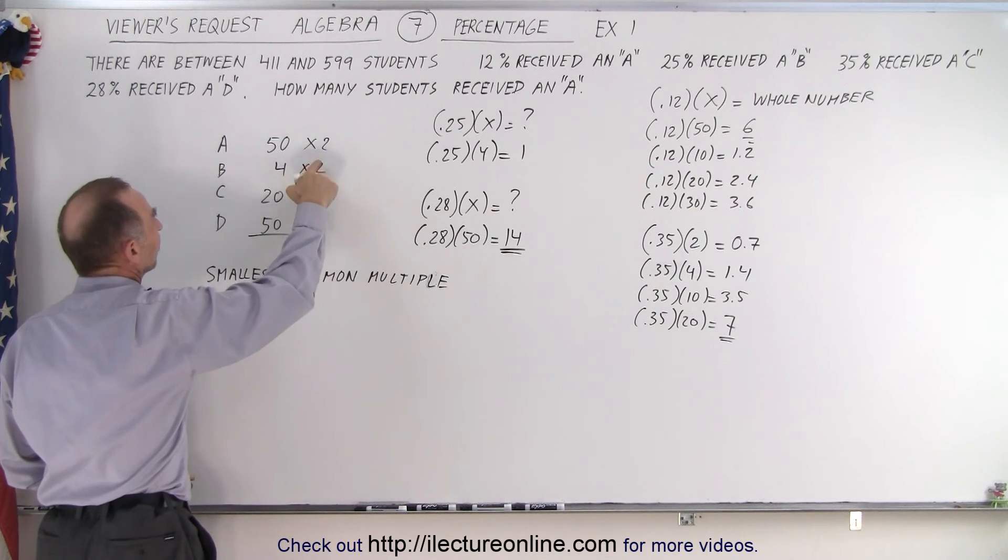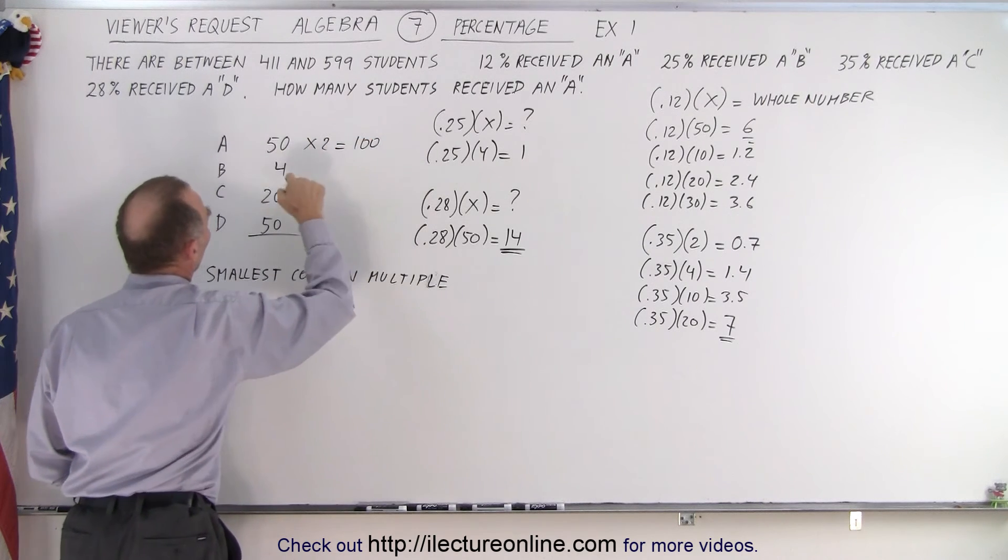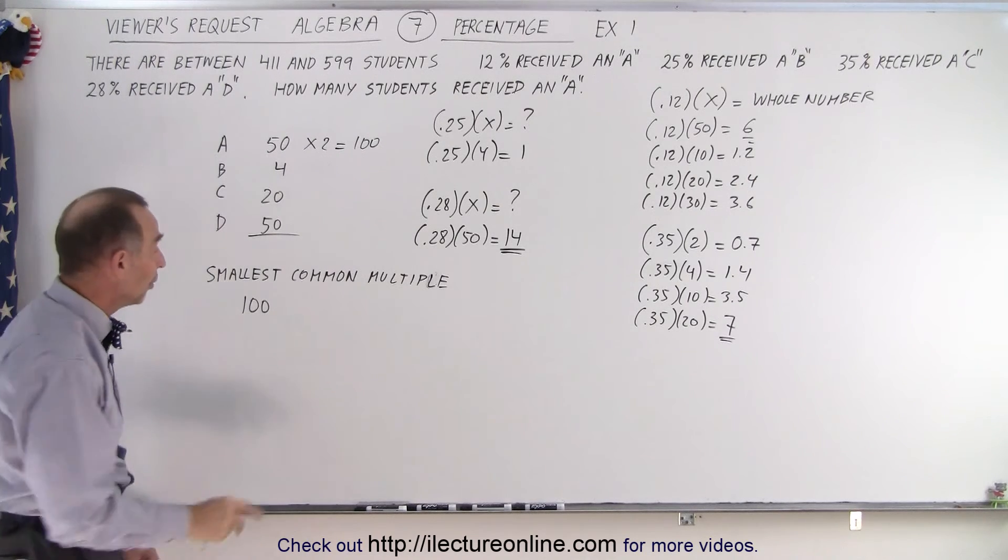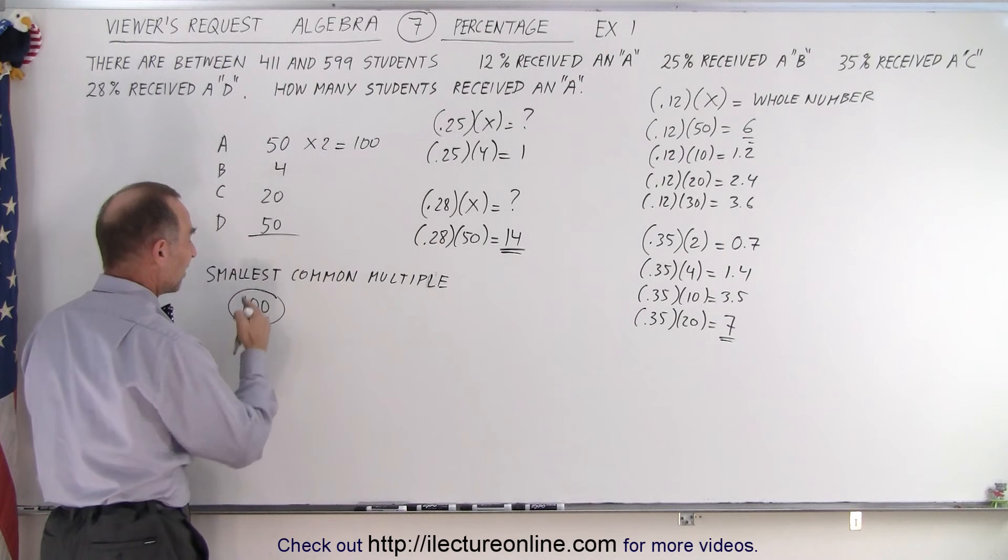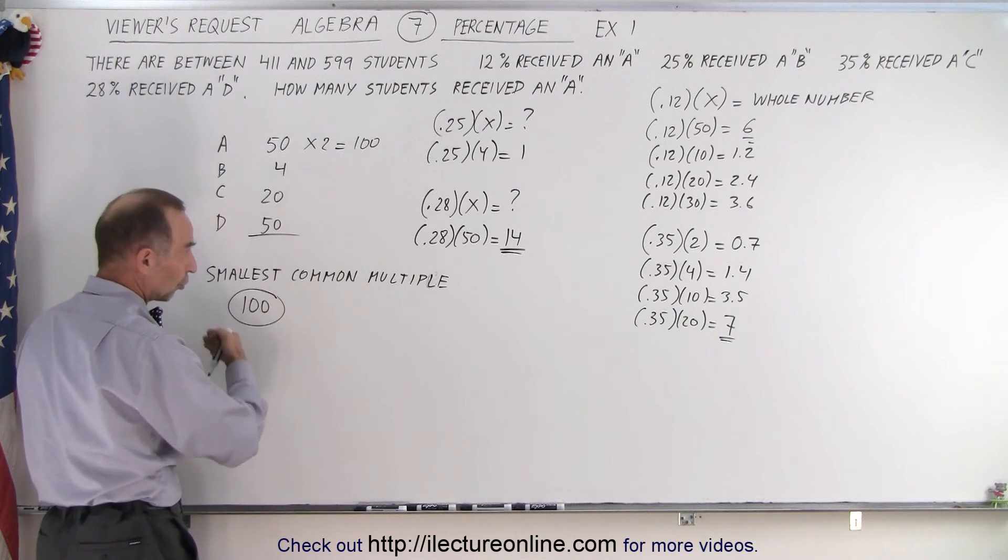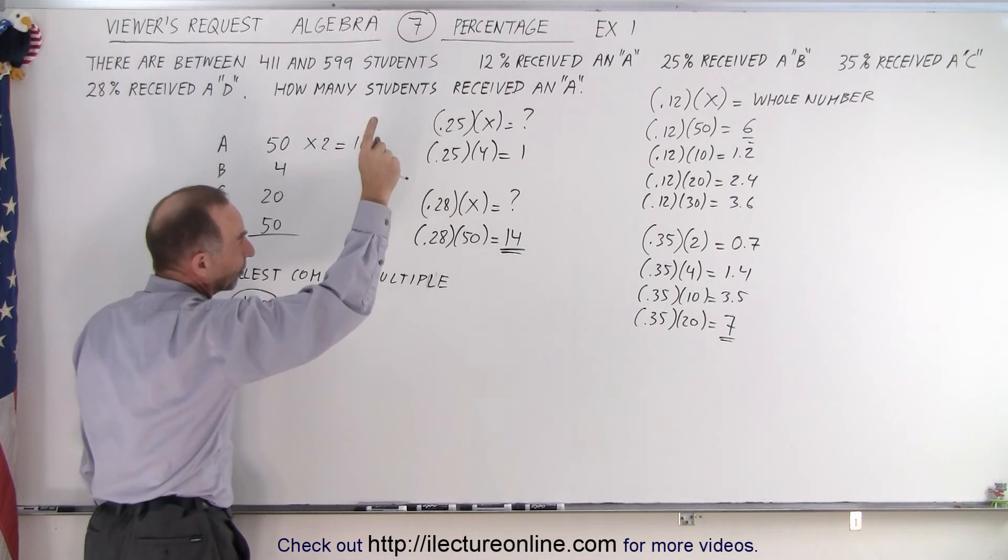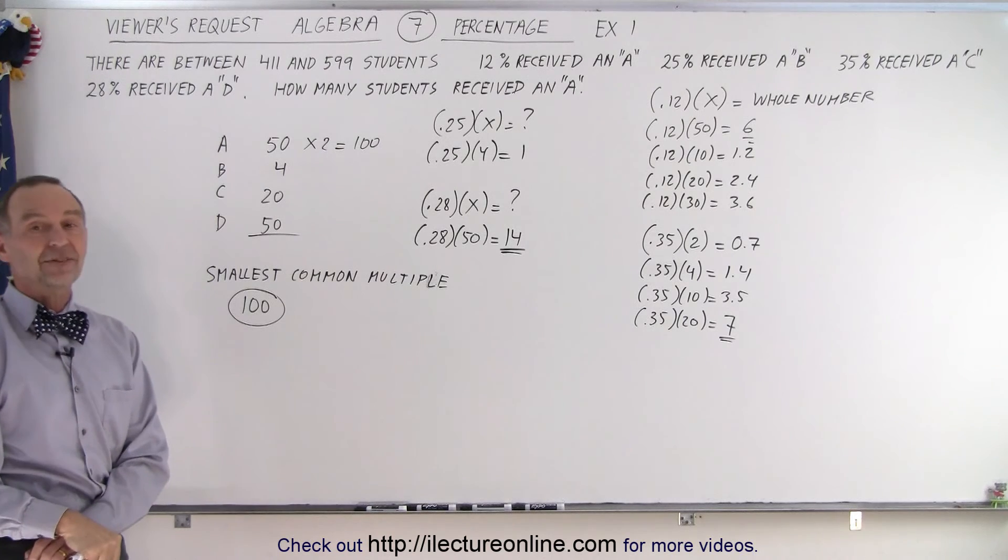If I multiply this times 50, and 50 times 2, I get 100. Now all the other numbers fit into 100 evenly, and that's what I need. So my smallest common multiple is equal to 100. So if I have 100 students, or 200 students, or 300 students, in each case, I can take 12%, 25%, 35%, or 28%, and I come up with a whole number. That's the key.